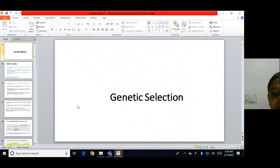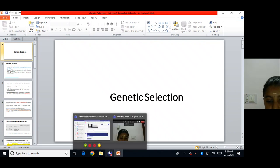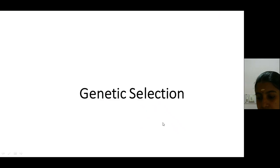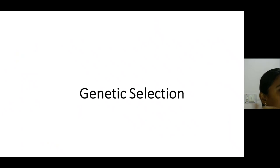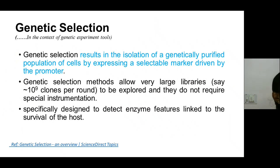Good morning. Today's class is on genetic selection. Genetic selection can be defined in two contexts: first, in the context of the experimental methods we employ to select genetically pure cells, and second, in the context of molecular ecology. The topic given is genetic selection, and we will go into the genetic selection definition in the context of genetic experimental tools.